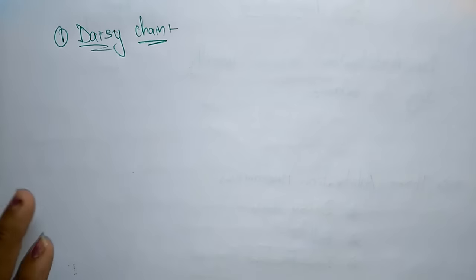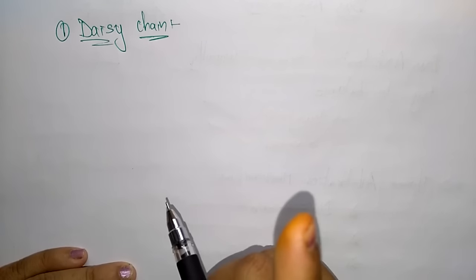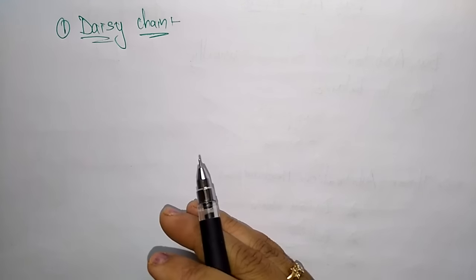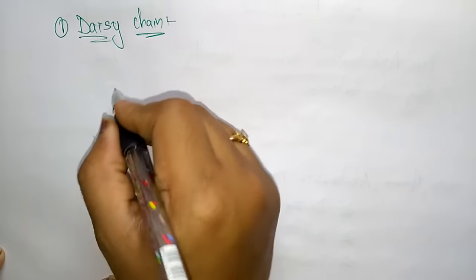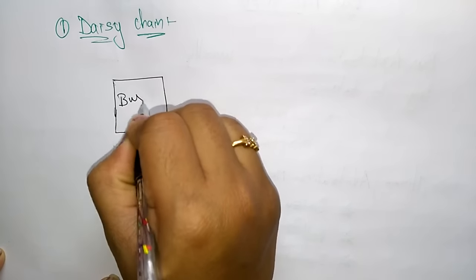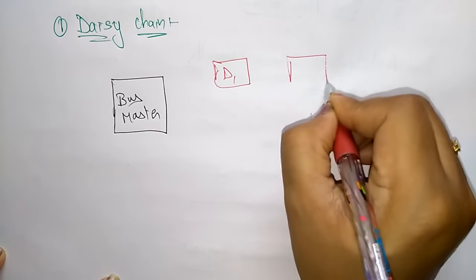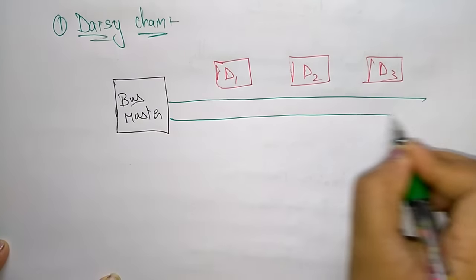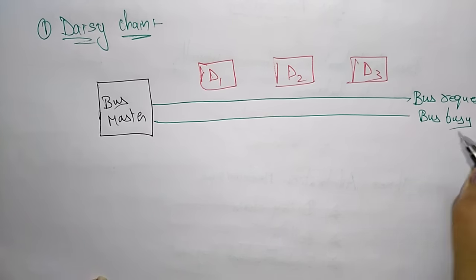The first mechanism is daisy chain arbitration. The deciding is done by only one master — every system has only one bus master. Consider three devices D1, D2, and D3 connected to the bus master. These devices are connected via three lines: bus request, bus busy, and bus grant.